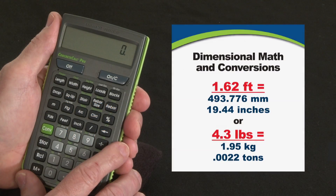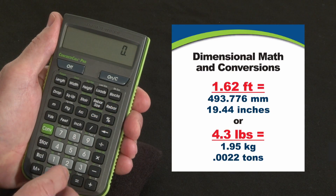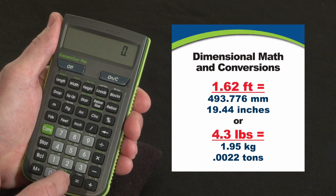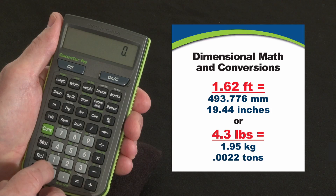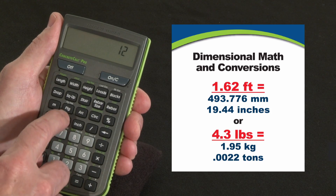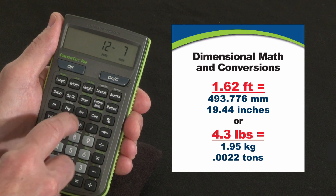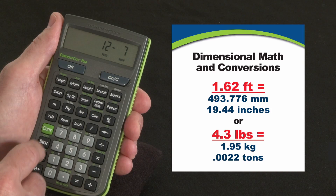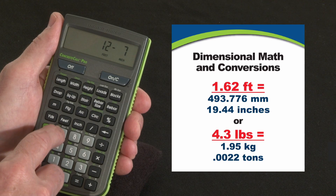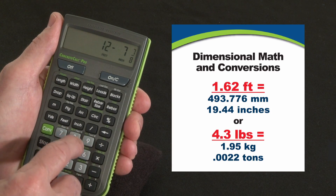Concrete Calc Pro — let me show you how your Concrete Calc Pro can help you do dimensional math and conversions. First off, you enter a dimension pretty much the way you say it. So for example, 12 feet — you just label it — 7 inches, and any fractions down to 64ths, 7/8ths.